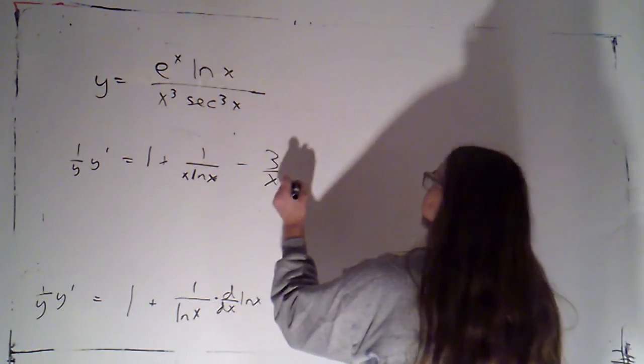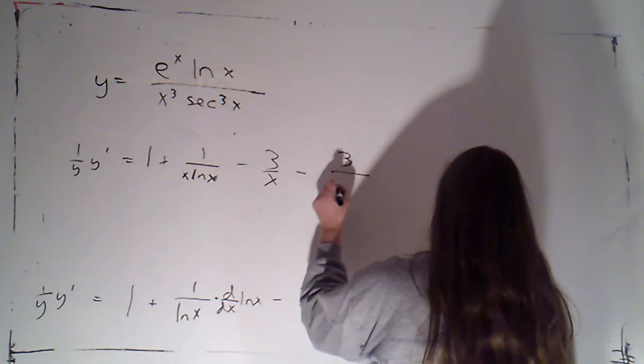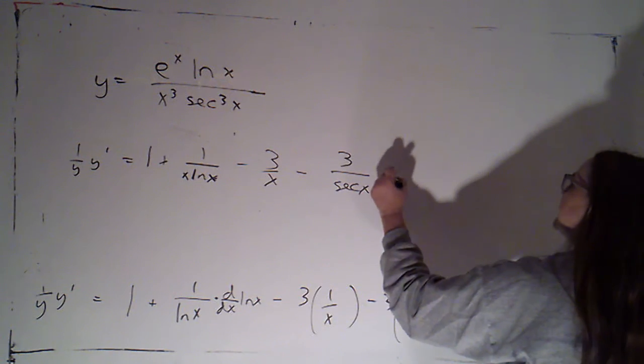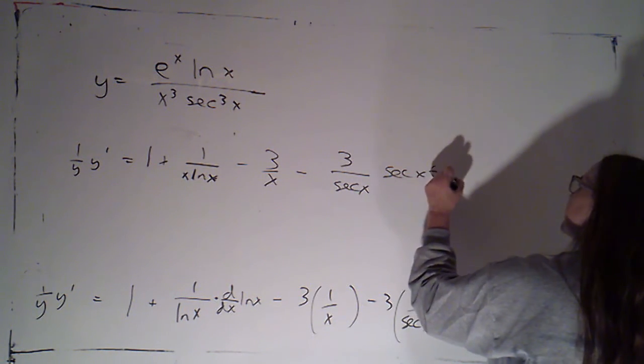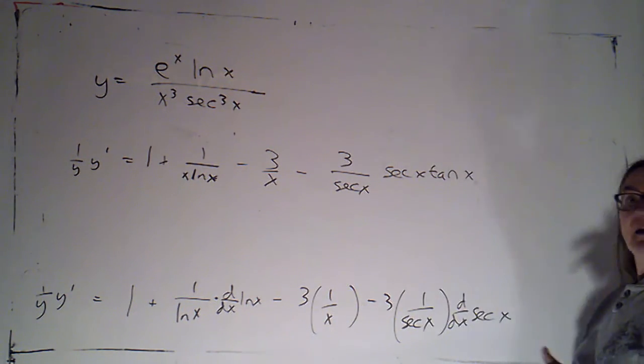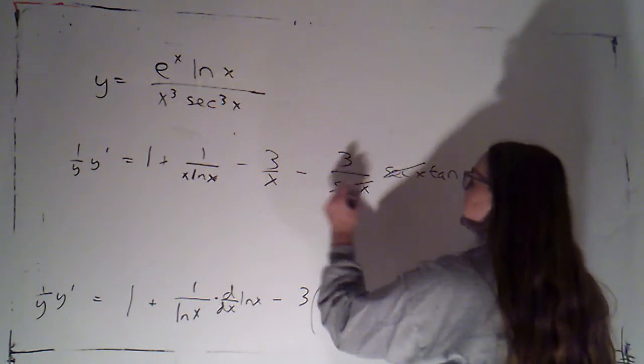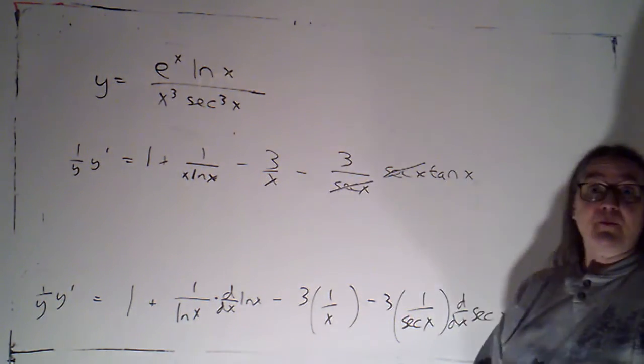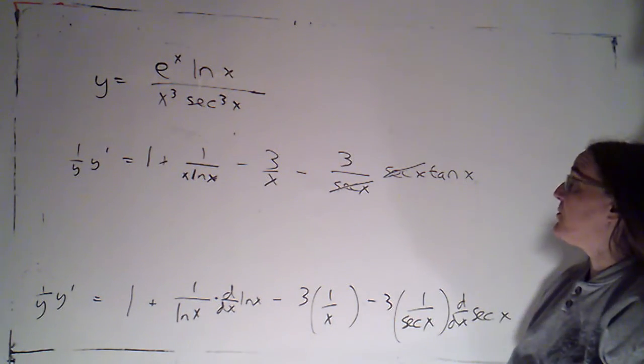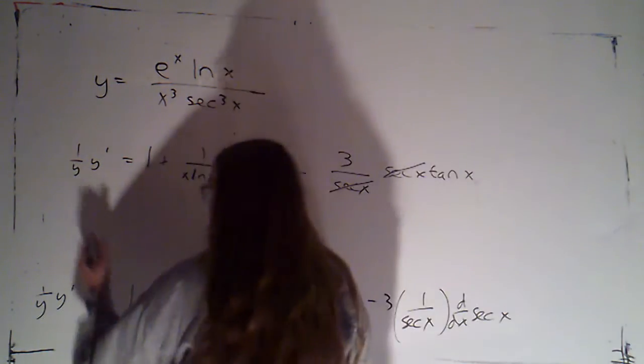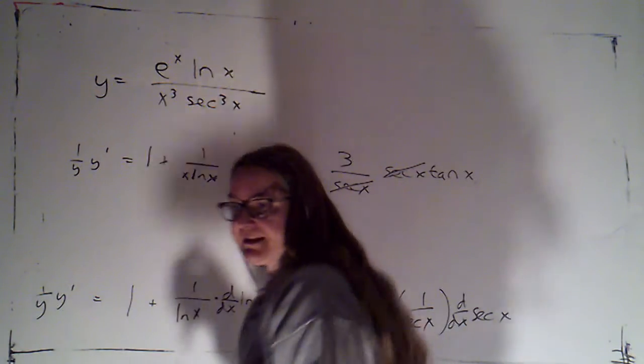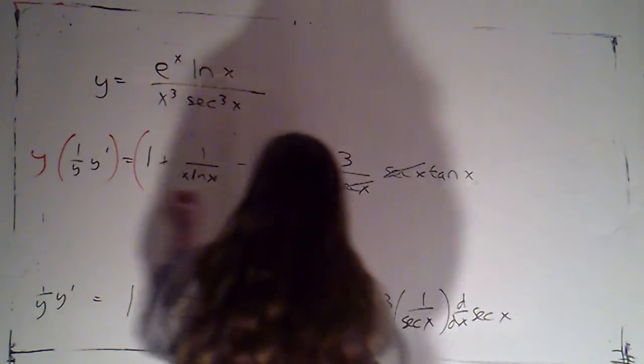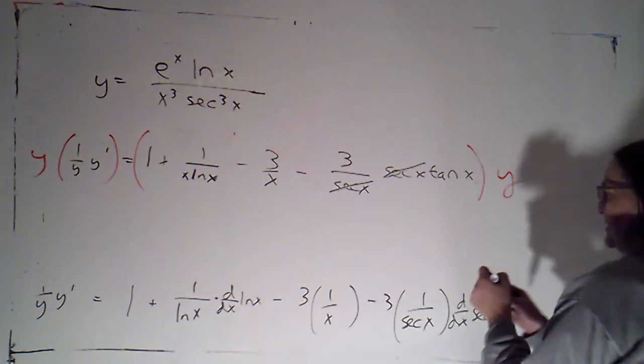Minus 3 over x. Minus 3 over secant of x. And then the derivative of secant is secant of x times tangent of x. And I can go ahead and cancel that secant. Secant of x is never zero. So, I'm not losing any information about restrictions on the domain. And so then, I'm going to just multiply both sides by y. Again, let me just indicate that in a different color here.